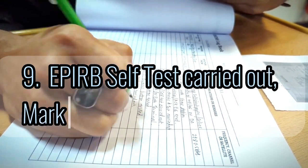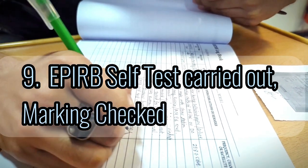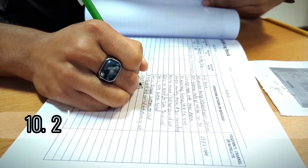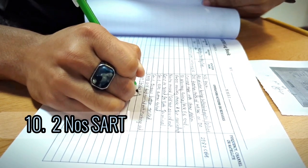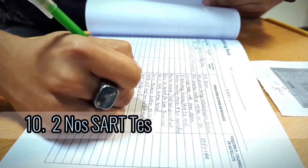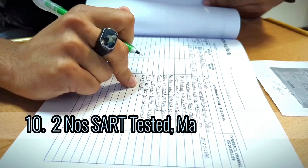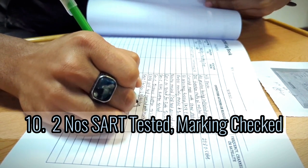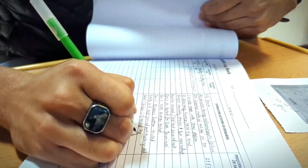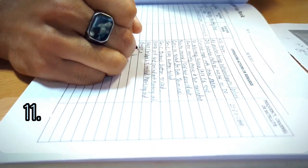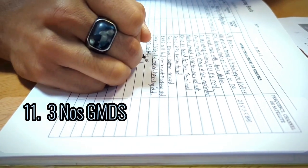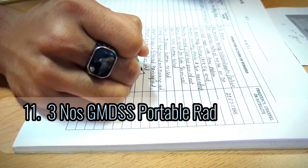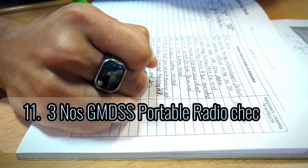Marking checked, SART bridge plus lifeboat. We have enclosed, we have three for lifeboat, so one of them is on the bridge and another on the lifeboat. SART tested, marking checked. GMDSS portable radios checked on channel 13 and 6.